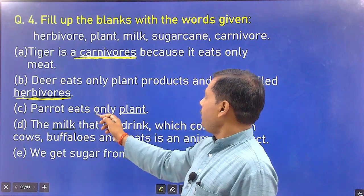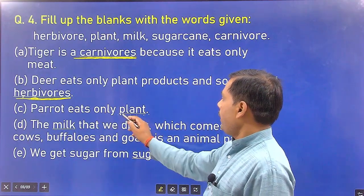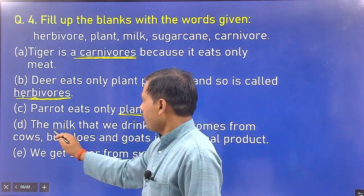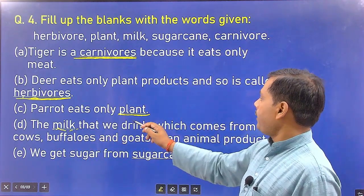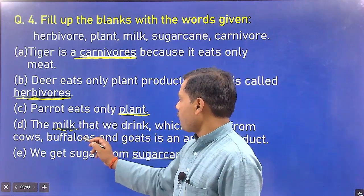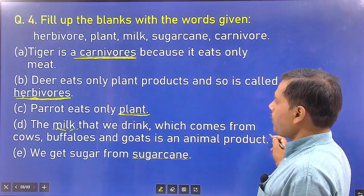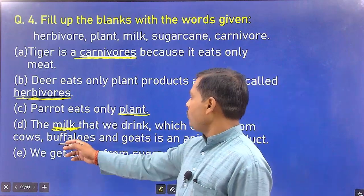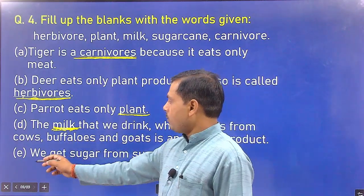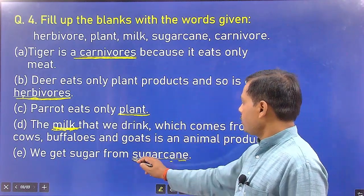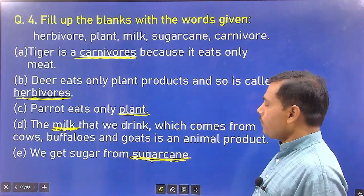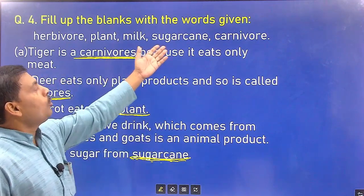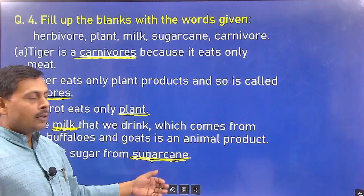Blank C: Parrot eats only plants. Blank D: The liquid we drink which comes from cows, buffaloes, and goats is an animal product — that is milk. Milk is the animal product obtained from cows, buffaloes, and goats. Blank E: We get sugar from sugar cane. We also get sugar from sugar beet, but the given option is sugar cane, so we fill in sugar cane.